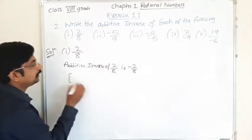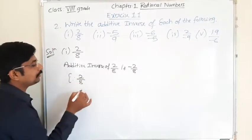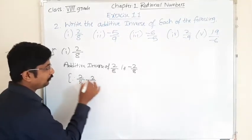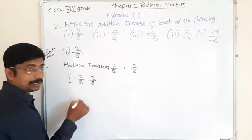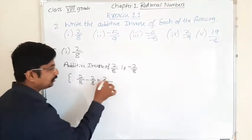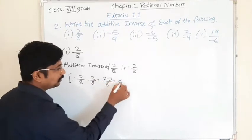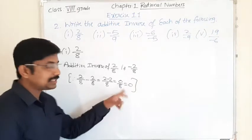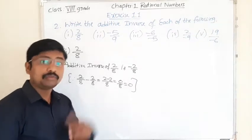Because see here, 2 by 8 is a positive one. If you add minus 2 by 8, what will we get? Since the LCM is 8, from numerator 2 minus 2, which is 0 by 8, which equals 0. Therefore, 0 is the additive identity of rational numbers.